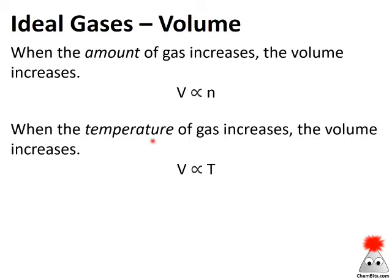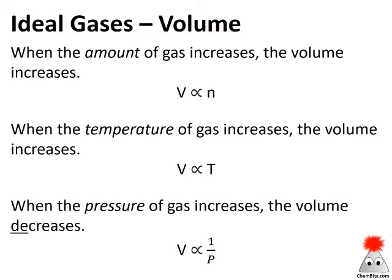When the temperature of a gas increases, the volume increases — so volume is proportional to temperature. As one goes up, the other goes up. And finally, when we think about pressure: when we increase the pressure of a gas, the volume decreases. Push on it harder and it gets smaller. That means volume and pressure are inversely related, so volume is proportional to one over pressure.